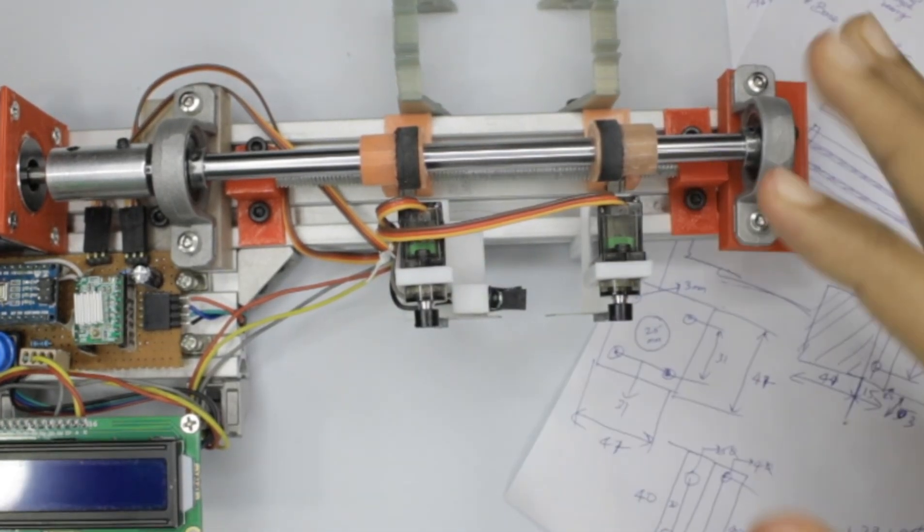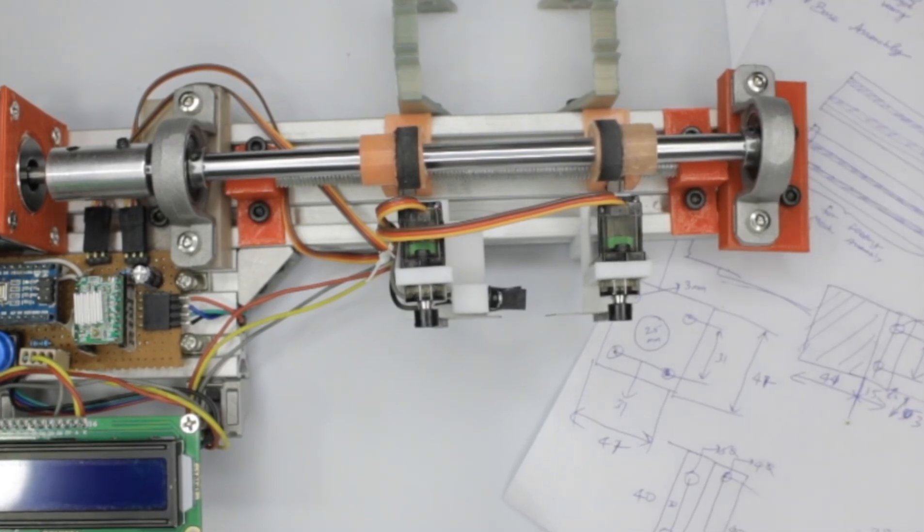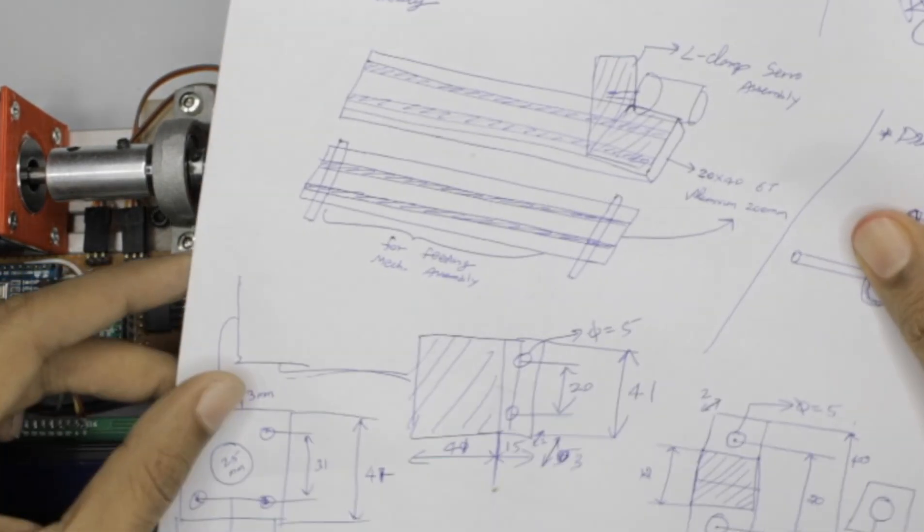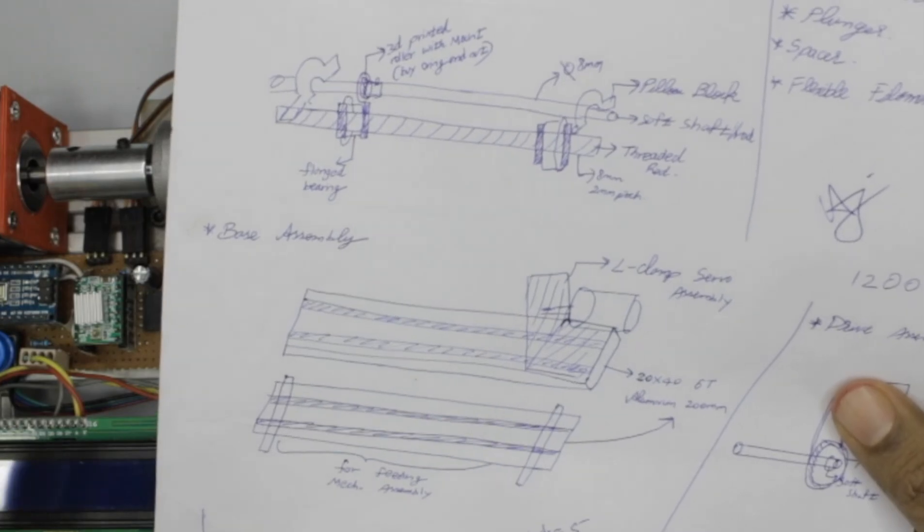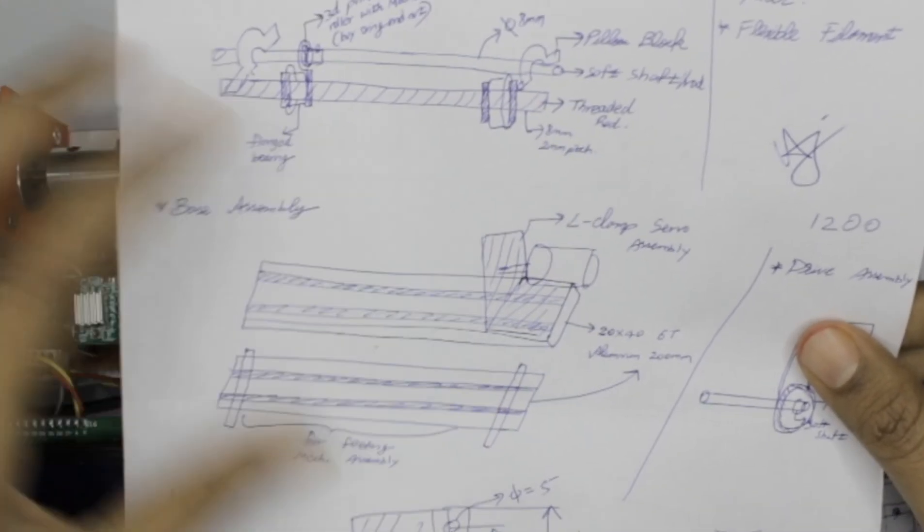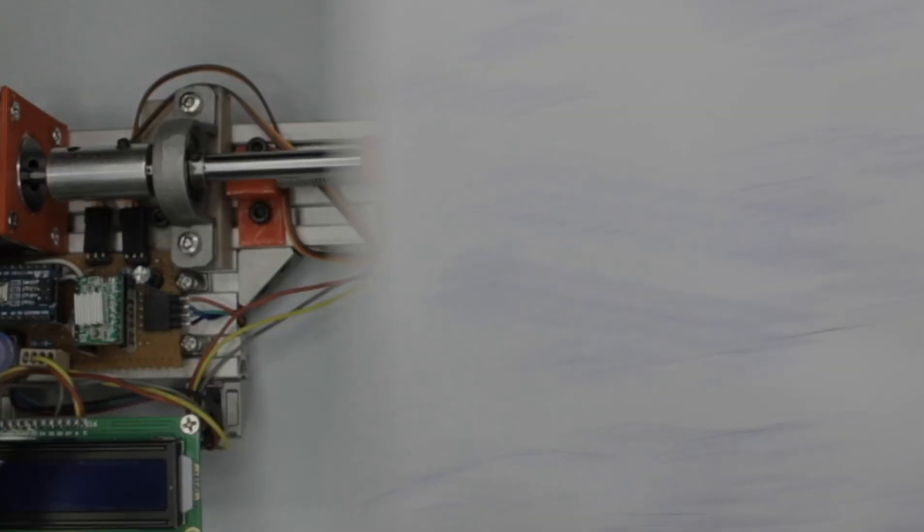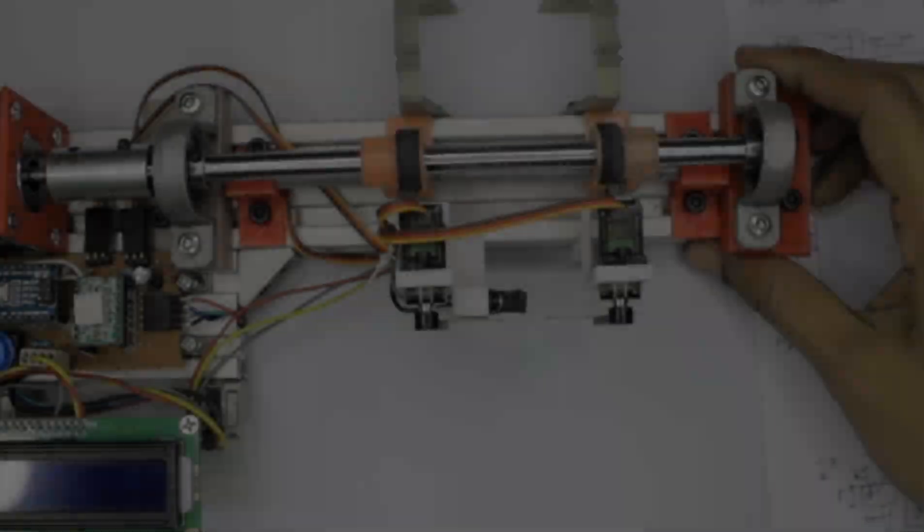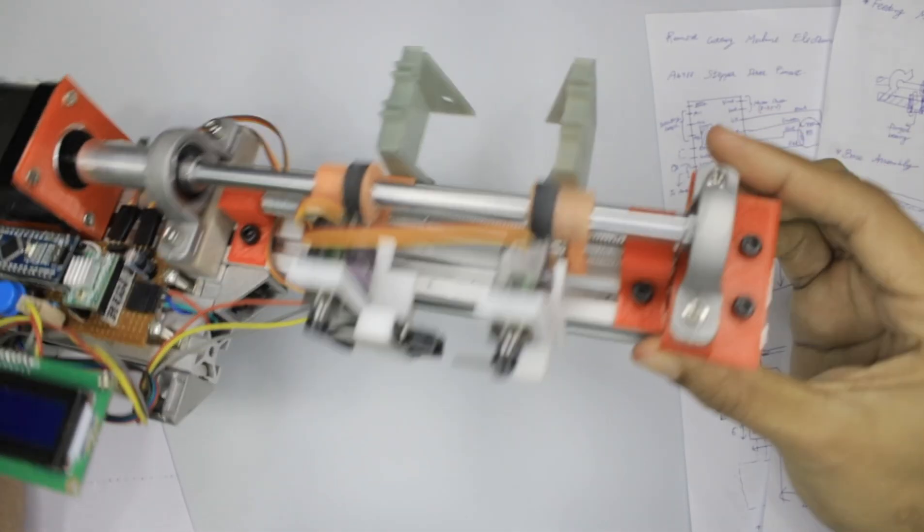The complete 3D design for this model as well as the STL files for all the 3D printed parts can be found at the documentation including the schematics and code. For explaining how this entire thing works, I'm going to split it into different sections.